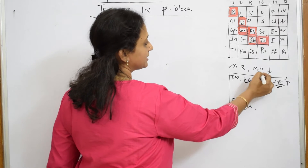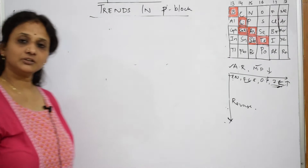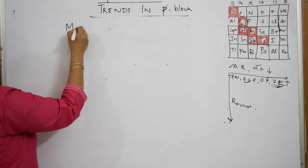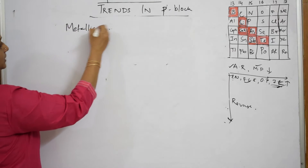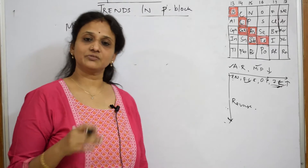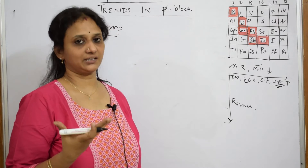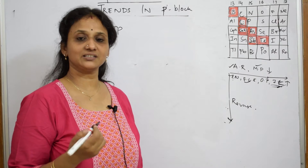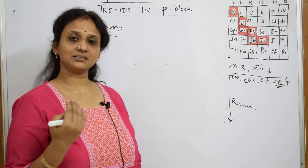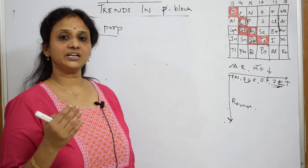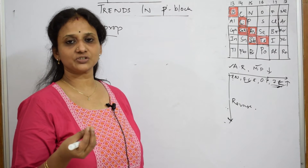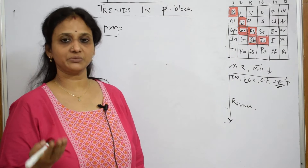We will be studying about the metallic property of p-block elements. Basically, metals are those which have the ability to donate electrons. That is the reason they are lustrous in nature because of the excitation of electrons. Metals donate or lose electrons, and non-metals are those which try to accept those electrons from the metals.